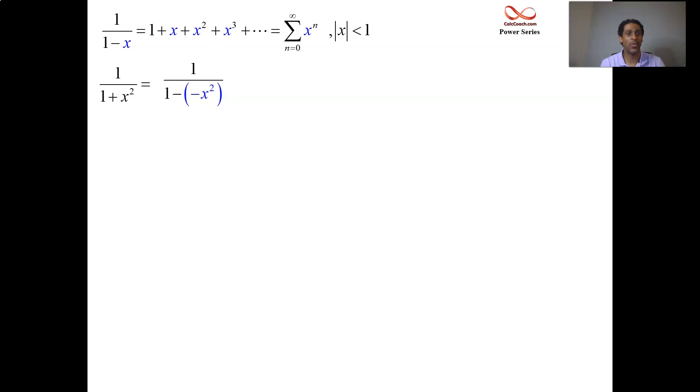So instead of 1 plus x, it's 1 minus x squared. Instead of plus x squared, it's going to be minus x squared squared. And so on. In the summation, instead of x to the n, it's going to be minus x squared to the n. It'll keep the same interval of convergence.